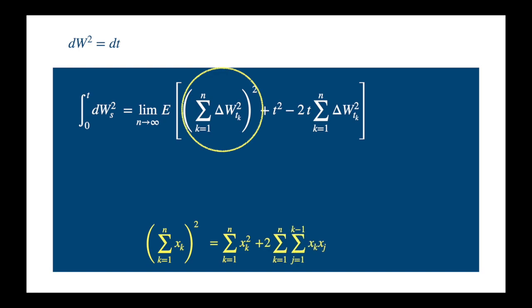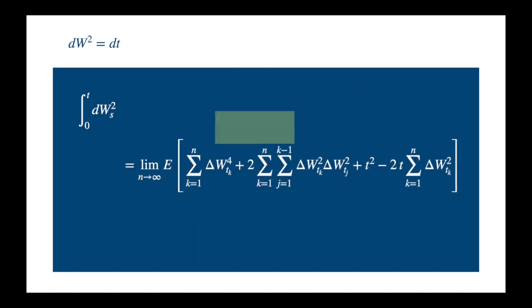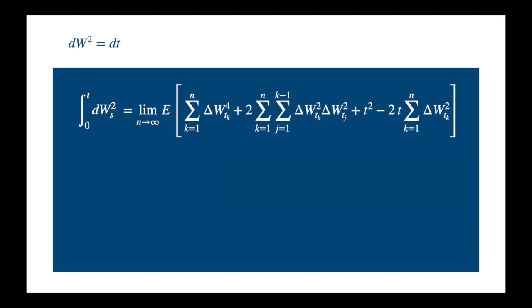We have W squared in place of x, so we get W^4 and W^2 instead of x^2 and x, and we leave the rest as it is. Now we know from the moments of Brownian motion video, that the expected value of W to the power of 4, is equal to 3 times the square of the length of the interval. So expected value of delta W to the power of 4 becomes 3 times delta t squared.